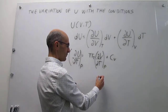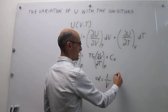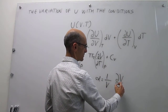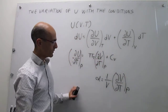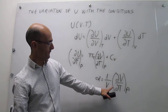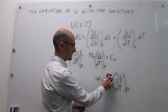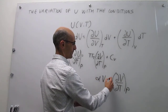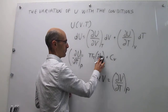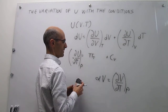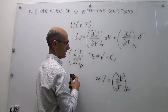The variable that allows us to better understand this variation of volume with temperature is the expansion coefficient, which we call alpha. It is defined as 1 over the volume times the partial derivative of volume with respect to temperature at constant pressure. We can solve for that first derivative, which is simply equal to the product of alpha and the volume. So we now have a way to evaluate this term: it is simply the expansion coefficient multiplied by the volume.